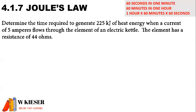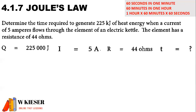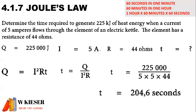Determine the time required to generate 225 kilojoules of heat energy, when a current of 5 amperes flows through the element of an electric kettle. The element has a resistance of 44 ohms. To convert kilojoules into joules, we multiply by 1,000. Time in seconds is the unknown variable, so time equals heat generated divided by the square of the current multiplied by resistance. The heat generated is 225,000 joules divided by 5² (which is 25) multiplied by 44 ohms. Therefore the time is 204.6 seconds.